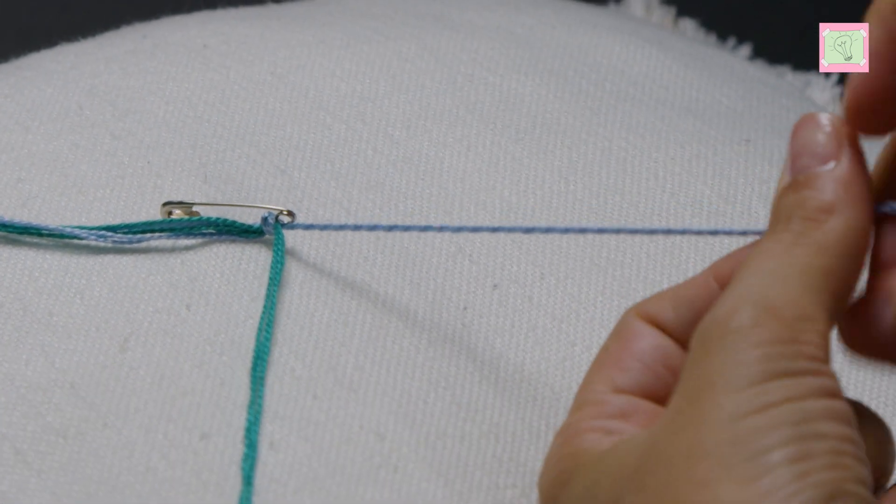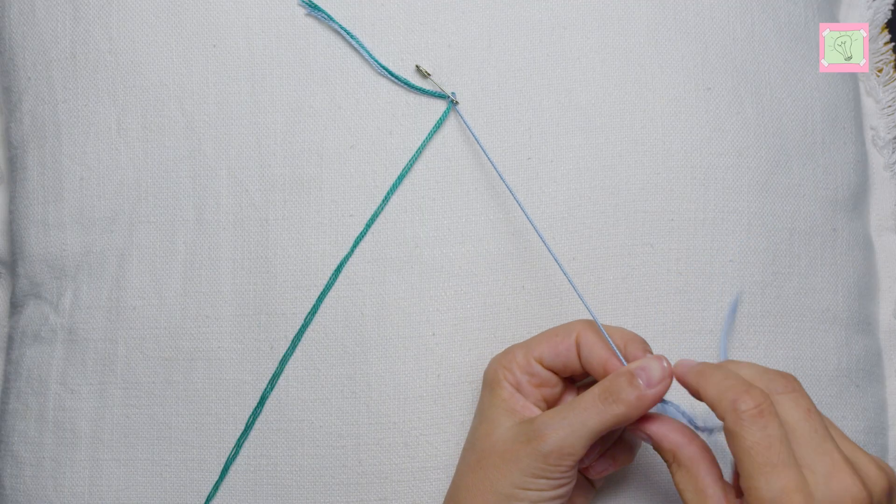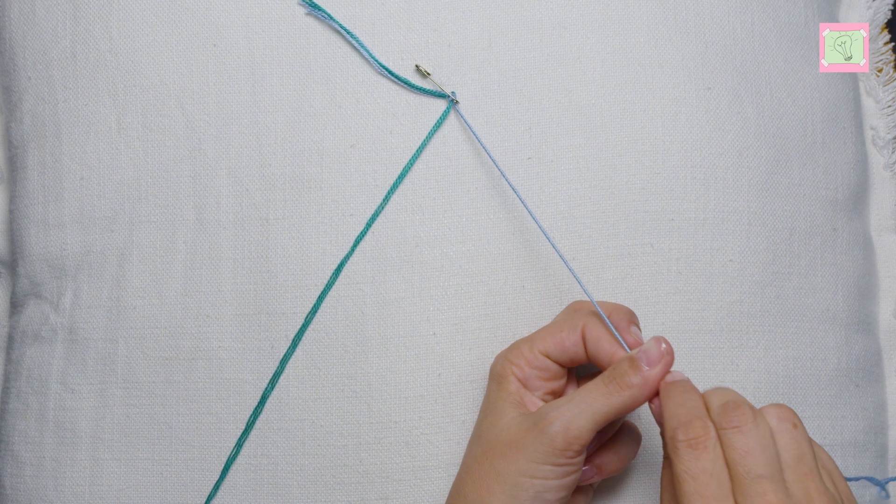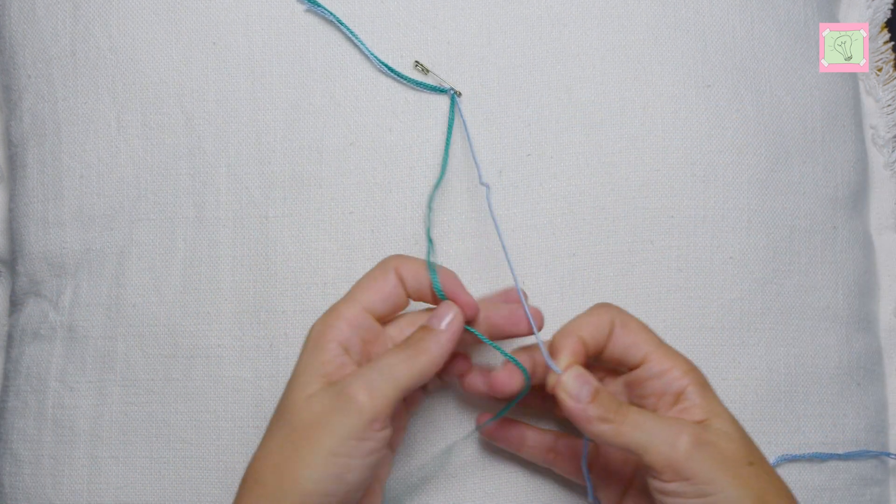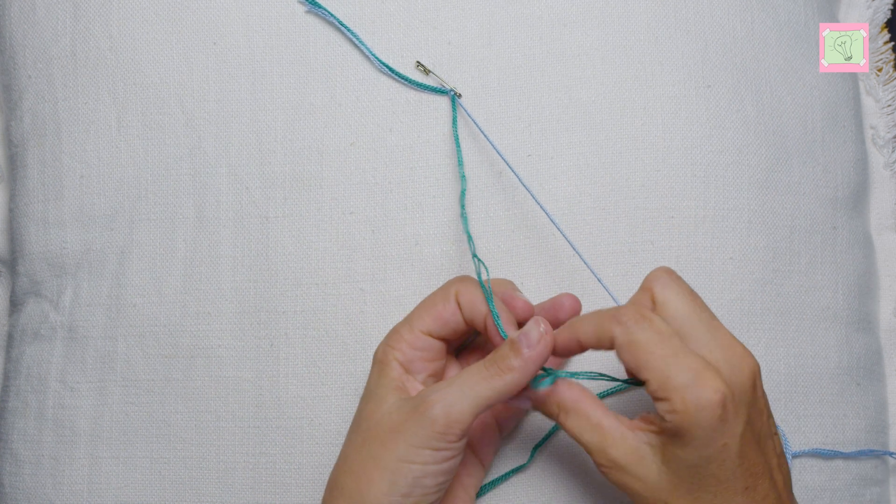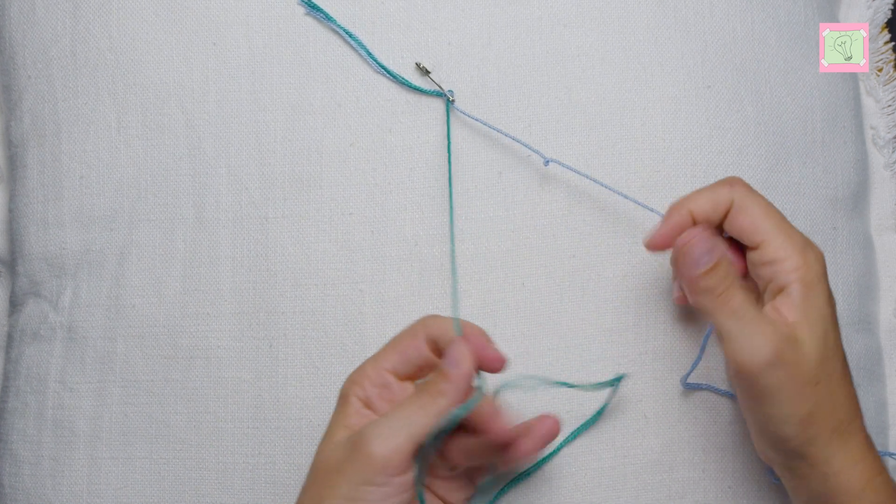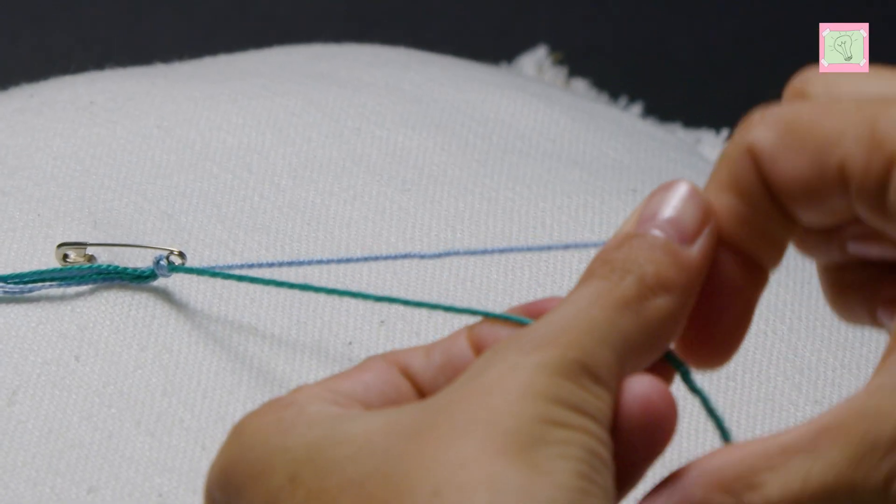I twist the blue threads to the right. I do this until the threads develop a momentum of their own. Then I twist the green threads to the right as well, holding the already twisted threads well.